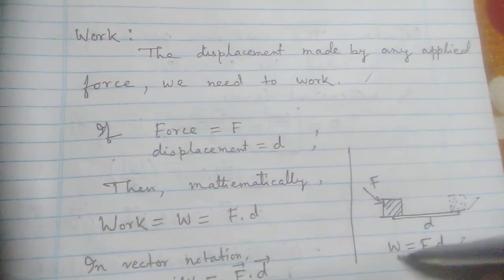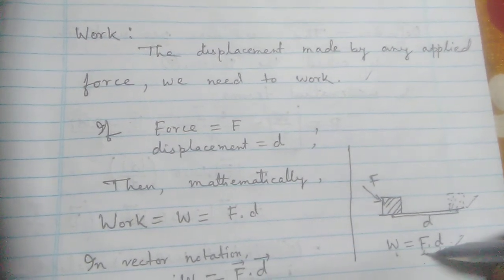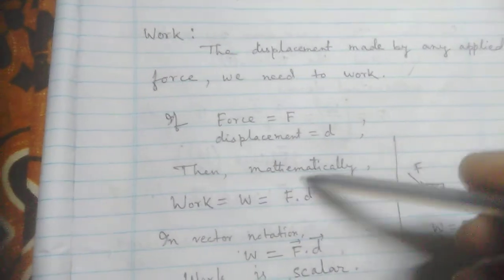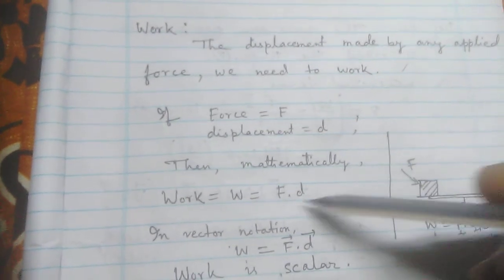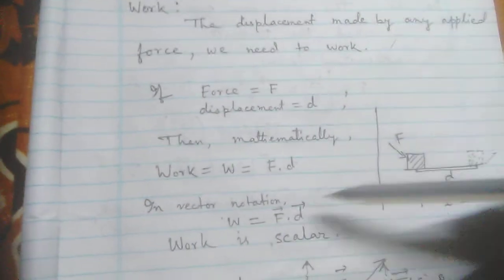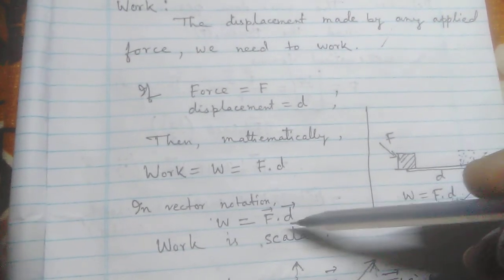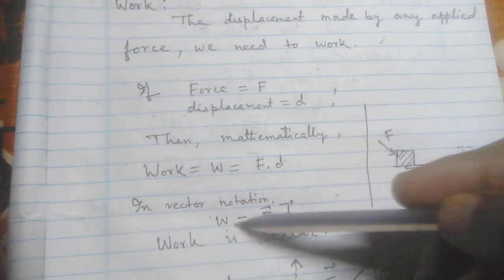Work has no direction. So work is a product of two vectors but it is a scalar product of two vectors. Here I have given the mathematical: work can be written W = F⃗ · d⃗. In vector notation, work can be presented by vector F dot vector d. It is a scalar product and work has just magnitude